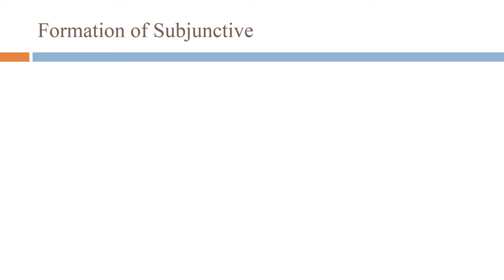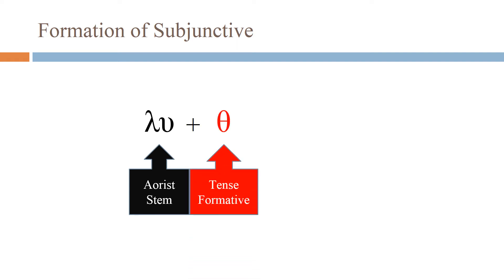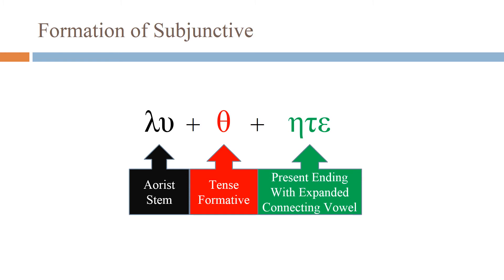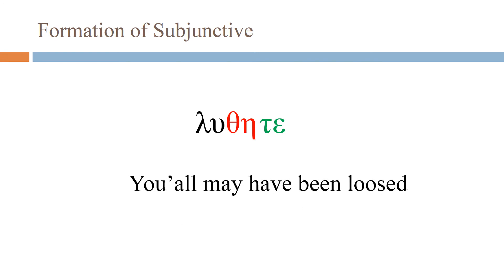Let's look at the formation of the subjunctive. We're using an aorist stem here, though the formation can take either a present or aorist stem — that defines its aspect. Since luo is the same in both present and aorist, we'll call it the aorist stem so we can include a tense formative. In this case, theta is the aorist passive tense formative. We put a present ending with an expanded connecting vowel: instead of -ete, we get -ēte. So luthēte — 'y'all may have been loosed.'